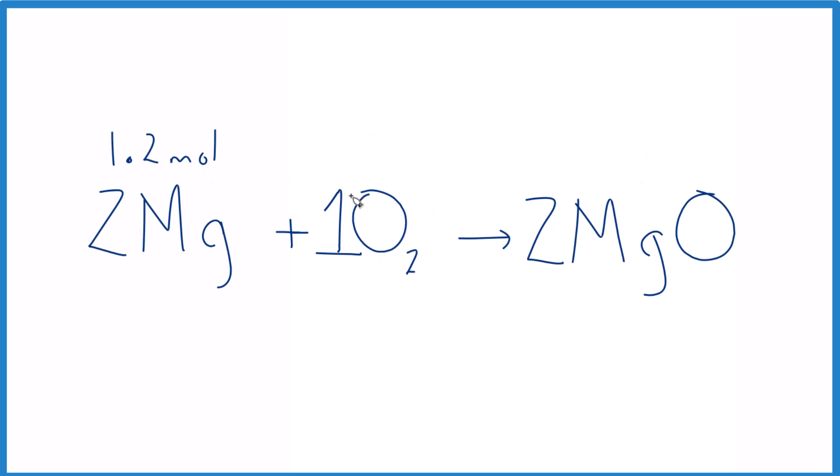1.2 is to 2 as we cut it in half, so 0.6 moles of oxygen. And since 2 and 2 they're the same, 1.2 moles of magnesium oxide. But there's another way we could do this. Let me show you that real quick.